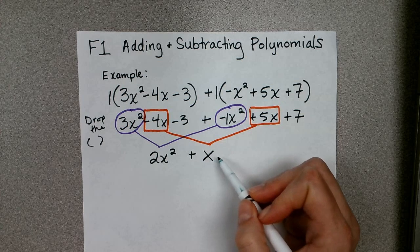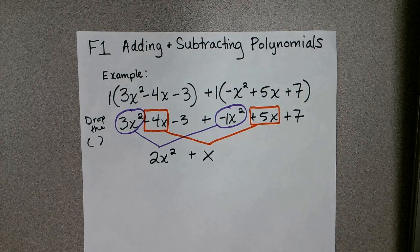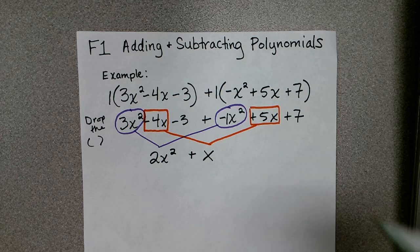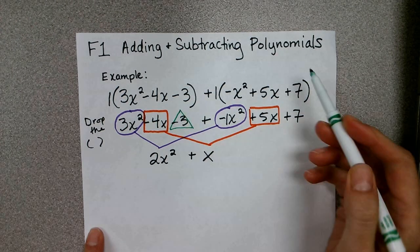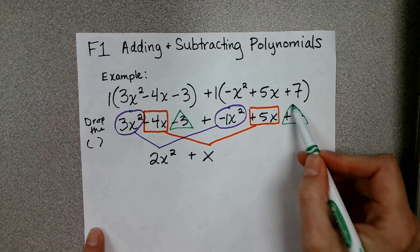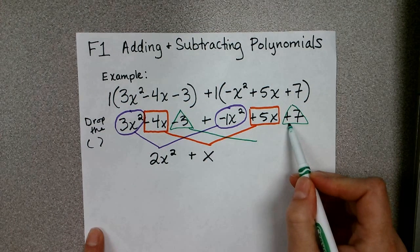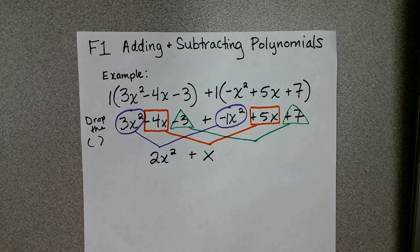So that's going to leave me with a positive x. Again, you can write a 1 in front if that helps you, or you can just leave it as plus x. And lastly, I have negative 3 and I have a positive 7, so these can also be combined because they're both constants.